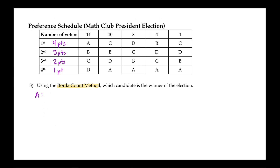So let's determine how many points each candidate got. For Anna, in the first pile, there were 14 ballots, and those 14 ballots ranked Anna as number one. So she receives four points times 14 from that pile. That's how this pile contributed to Anna's points.